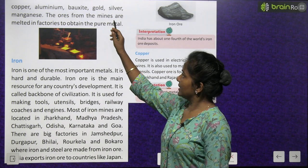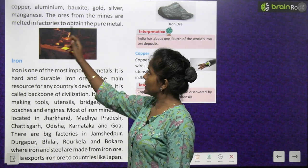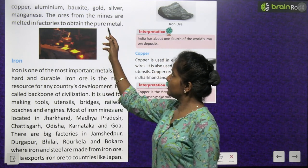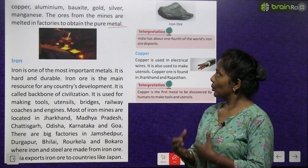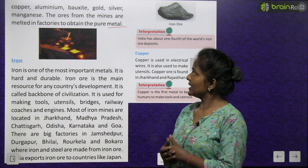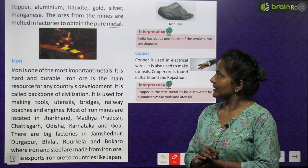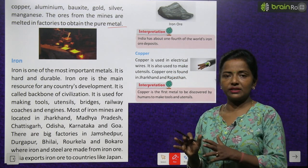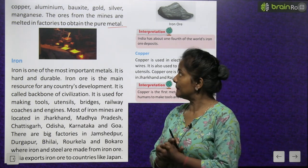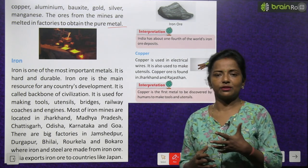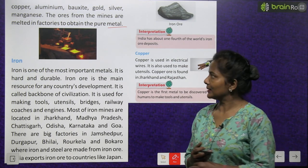The ores from the mines are melted in factories to obtain the pure metal — jo ores hote hain, jo mines mein se ores nikaale jaate hain, usko factories mein le jaake melt kiya jata hai, pahle piglaya jata hai, aur uske baad usmein se pure metal nikalta hai.